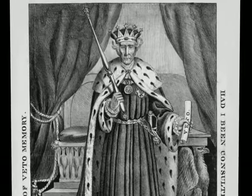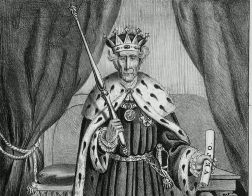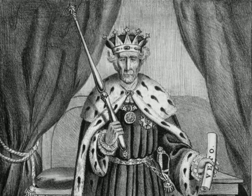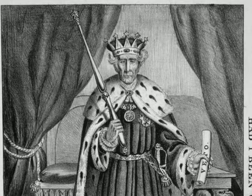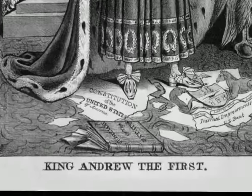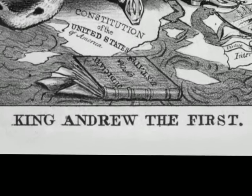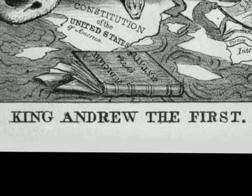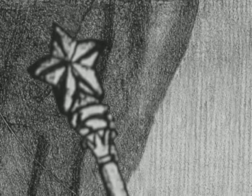This cartoon appeared in around 1833, specifically in relation to the Whig's epithet of King Andrew I. They viewed Jackson as a usurpation of executive power, and therefore wanted to paint him as a dangerous kingly power to the United States.